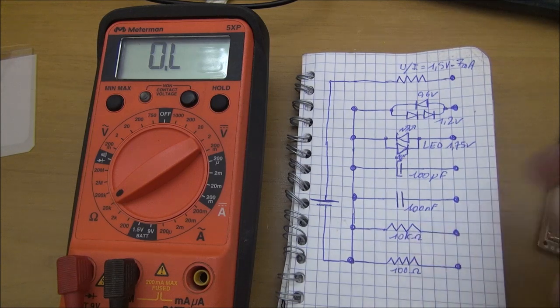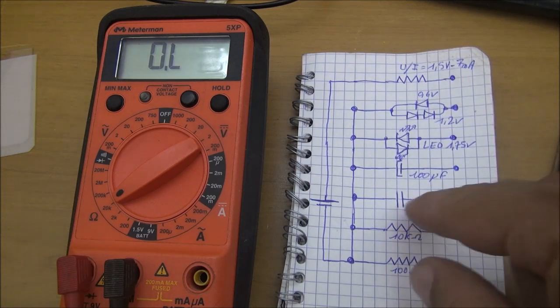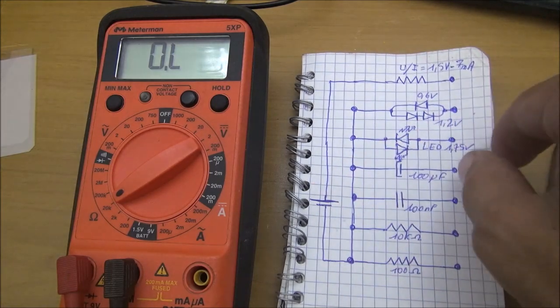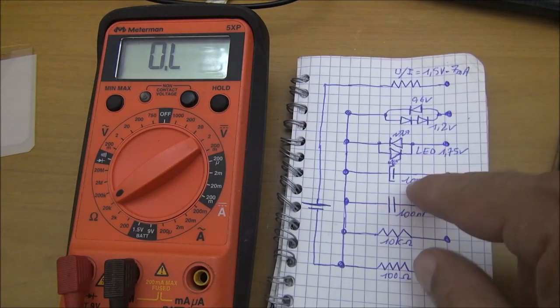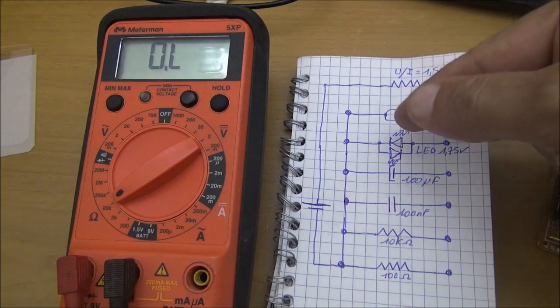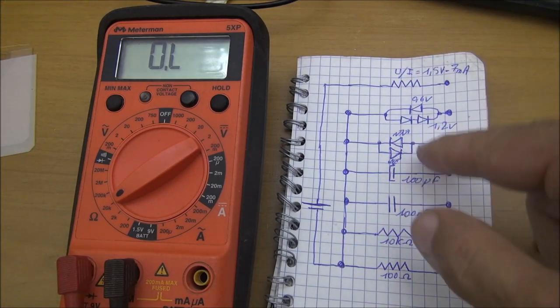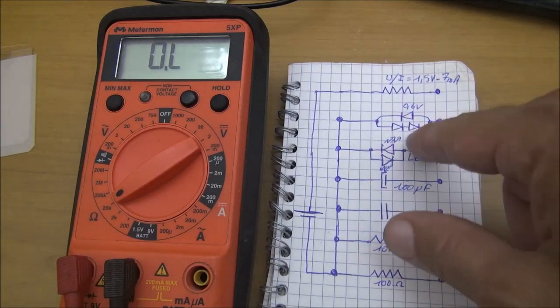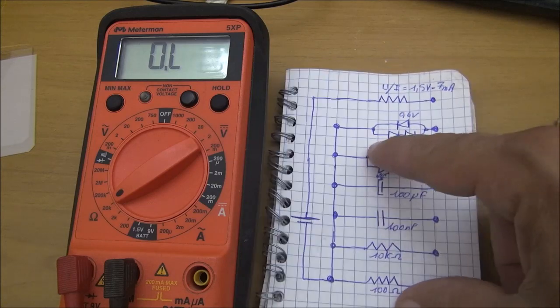You have a 100 ohm resistor, 10 kilo ohm resistor, a 100 nanofarad capacitor, a 100 microfarad electrolytic capacitor, red and green LEDs, and a simulation of normal diode and zener diode here.